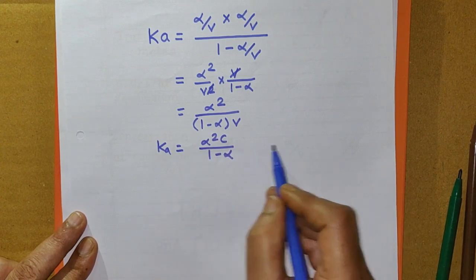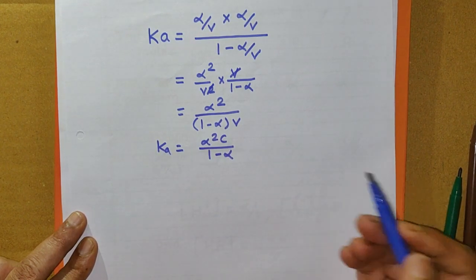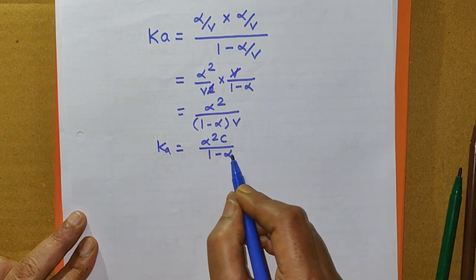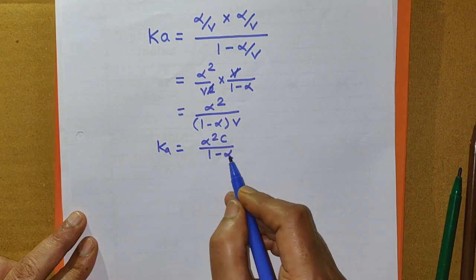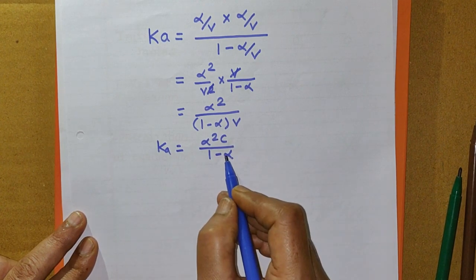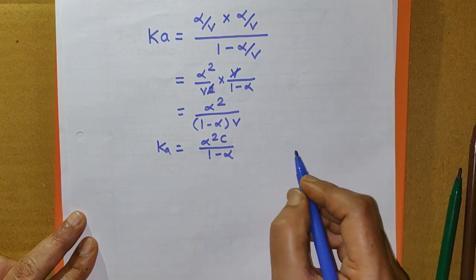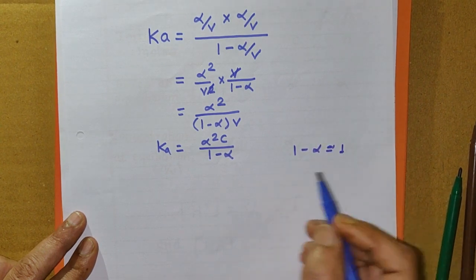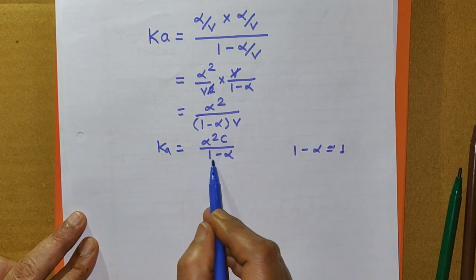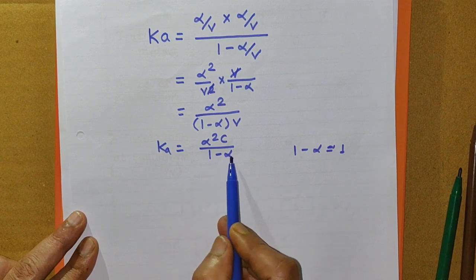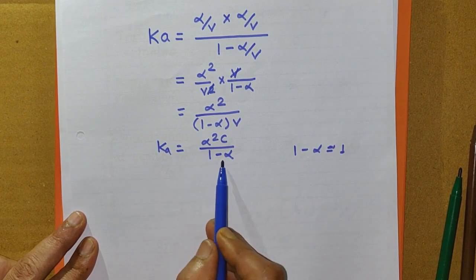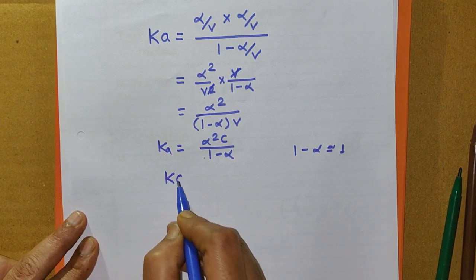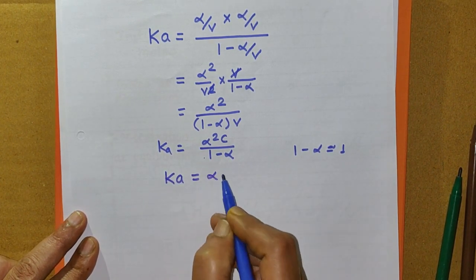This is the actual Oswald's Dilution Law, but for practical use it is modified. For a weak acid, the value of alpha is very small, so 1 − alpha is nearly equal to 1, and this term is taken as 1. Therefore, the simplified expression becomes Ka = alpha²C.